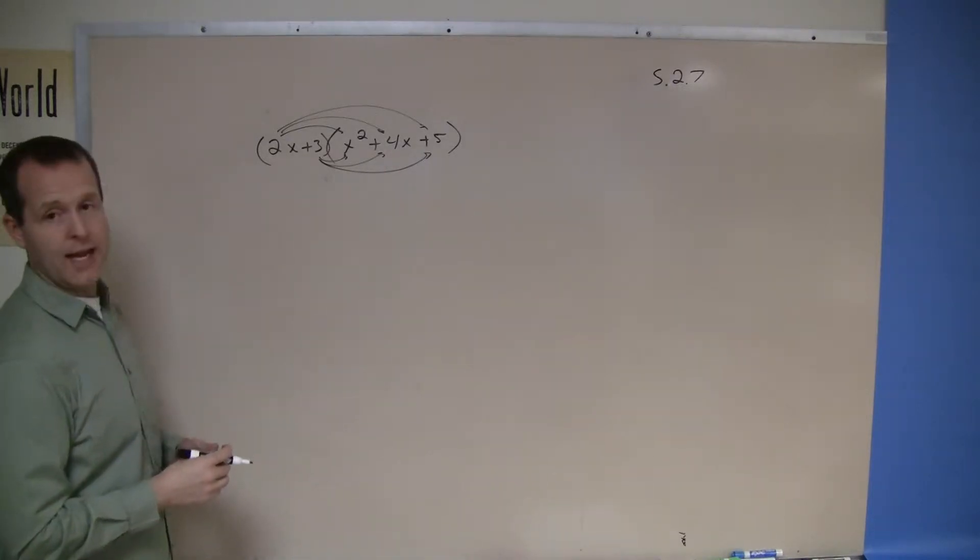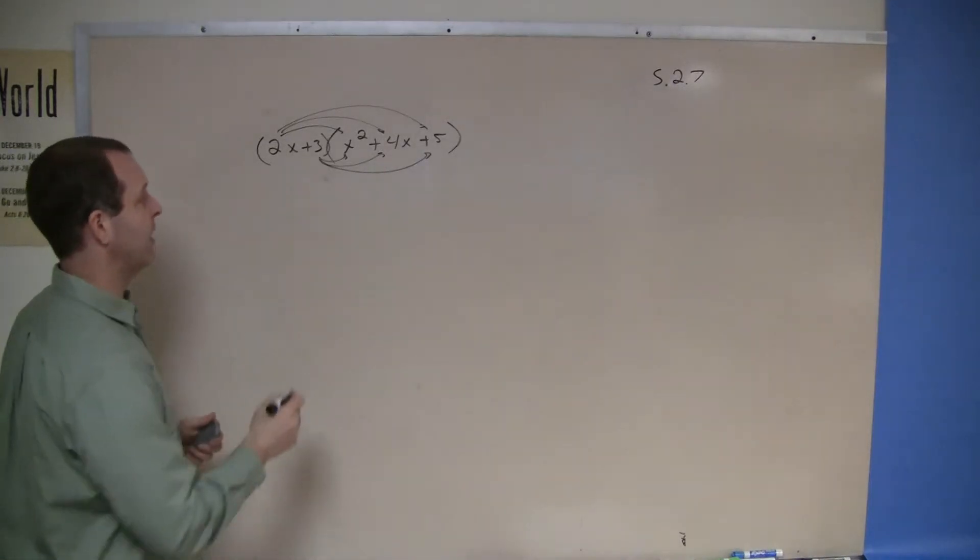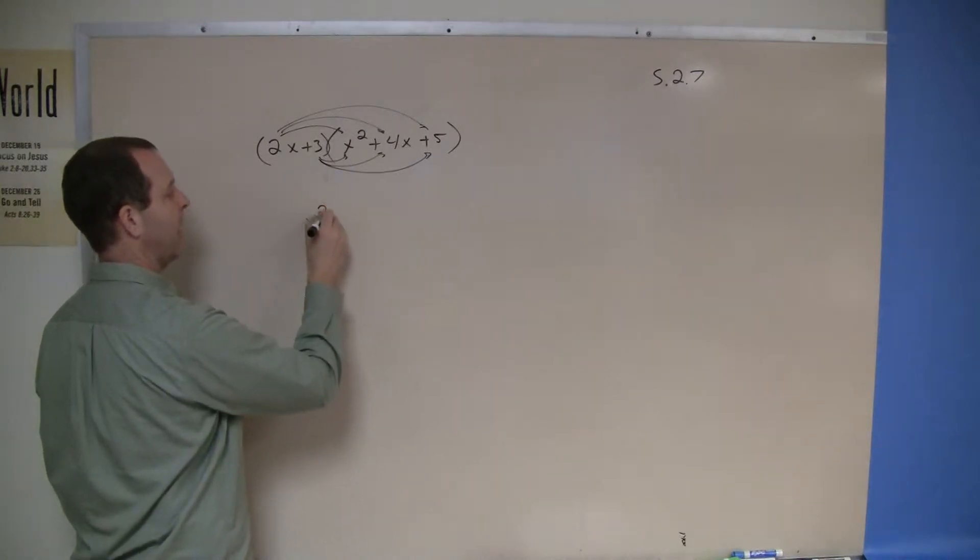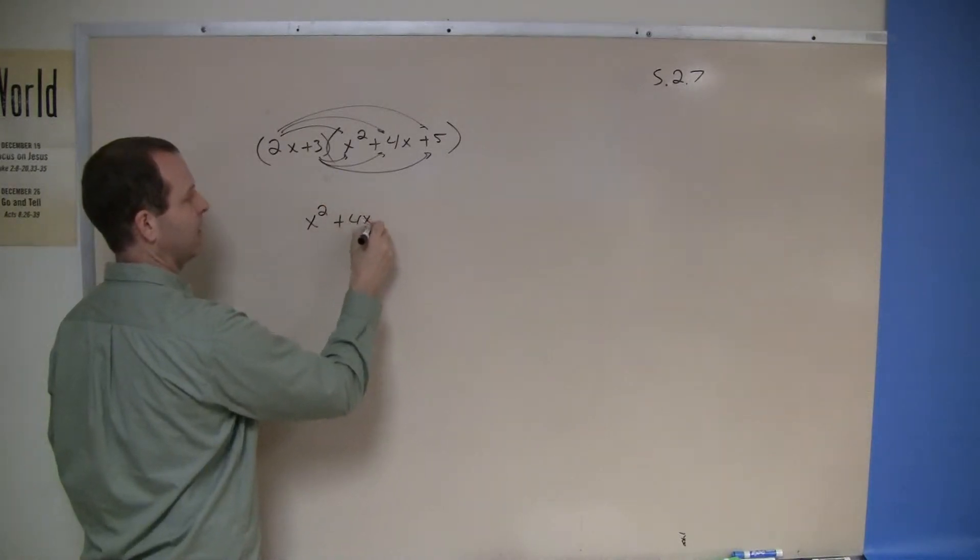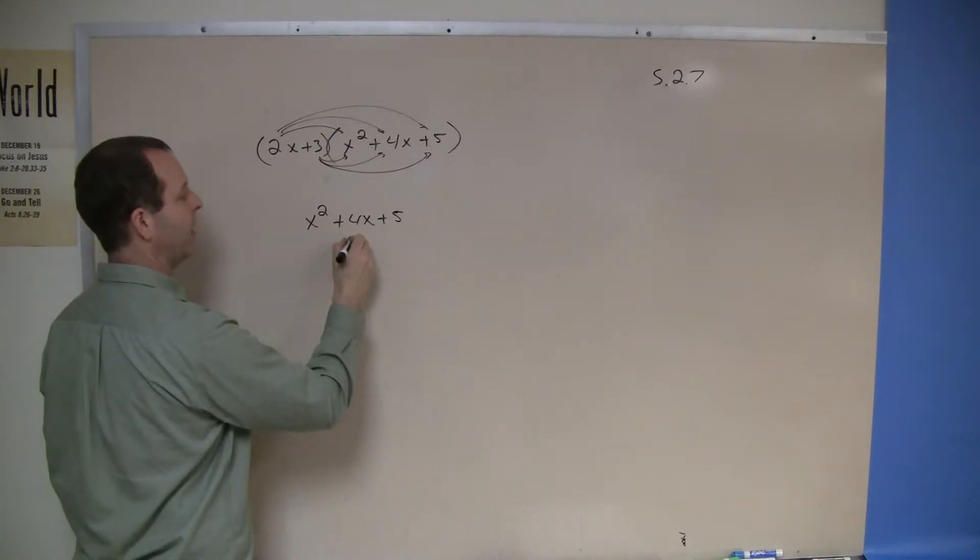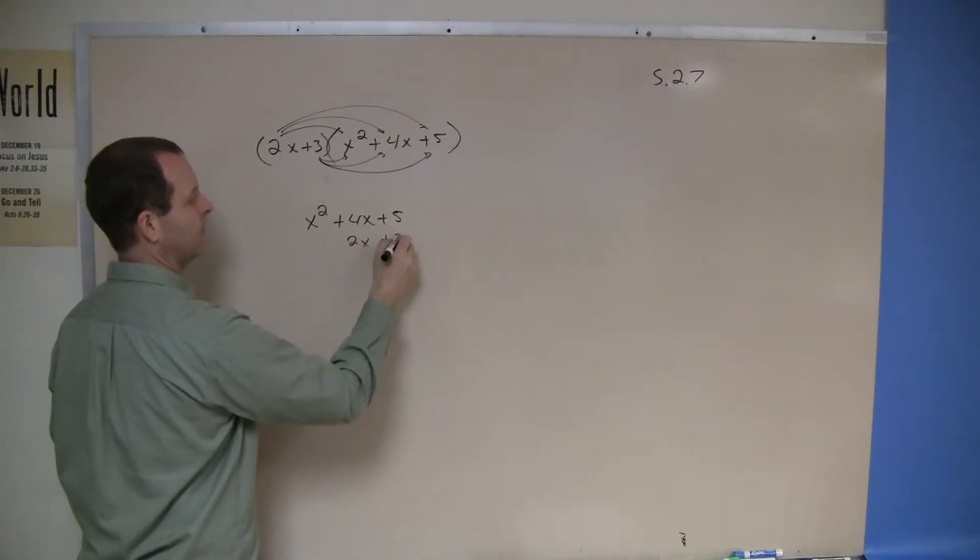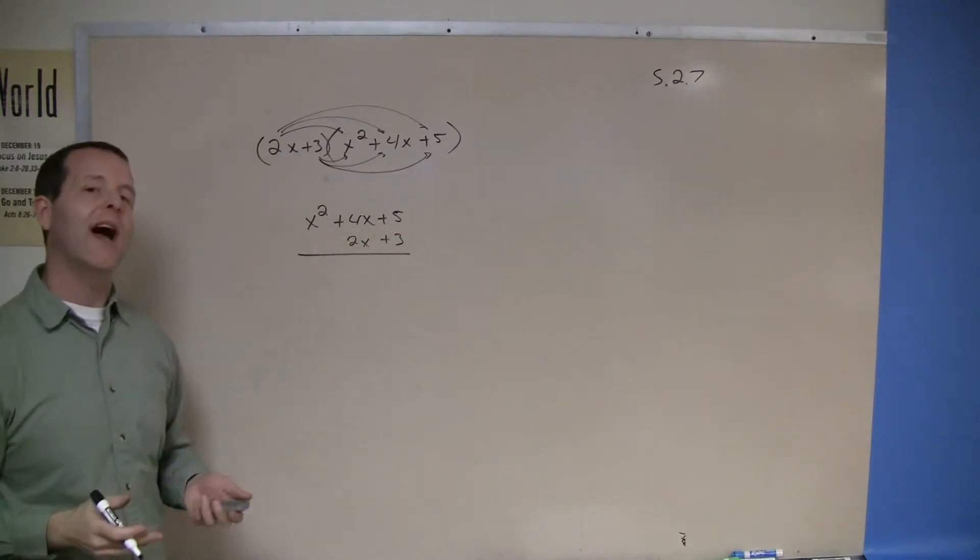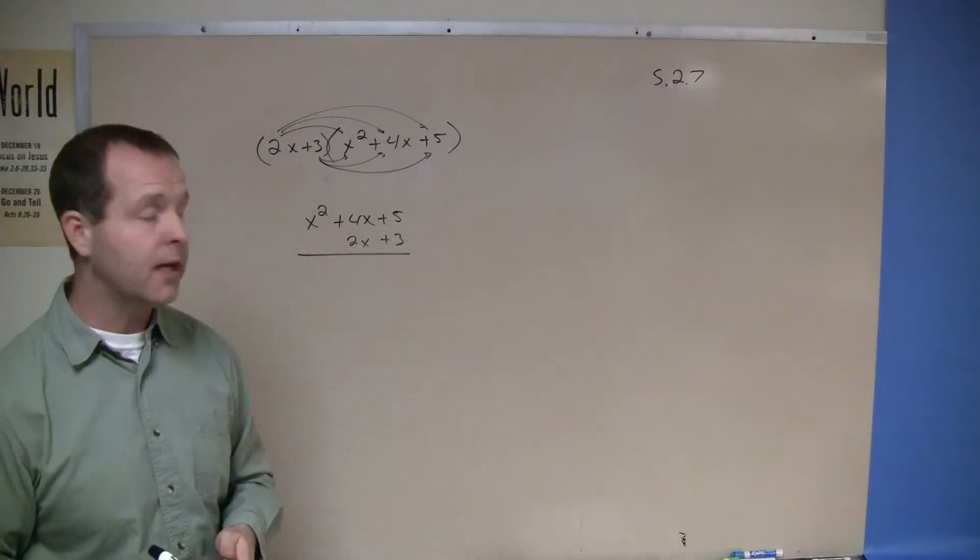One way that some people like to do is they like to stack these on top of each other, meaning that let's rewrite it as x squared plus 4x plus 5, and then the other one right underneath of that. Then multiply in the way that we were taught when we were younger.